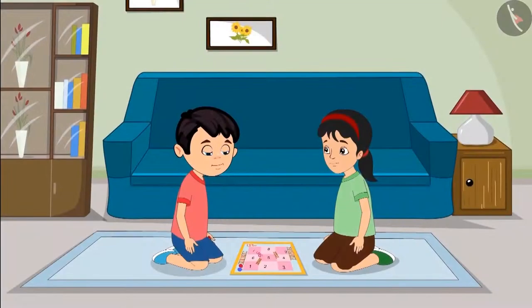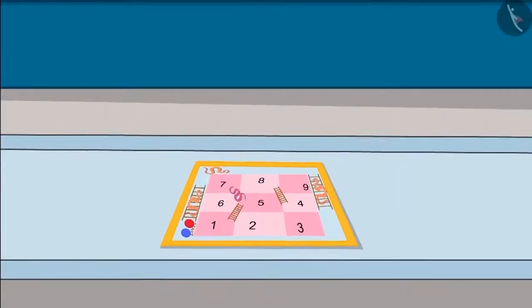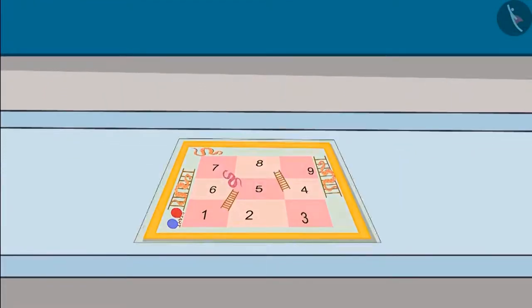Pinky and Chotu are playing the small snakes and ladder game because it has numbers only from 1 to 9. In this, two dice are thrown in turns and by adding numbers of both dice, one has to move the piece to the correct number. The one who reaches at 9 first wins the game. Let us see how Chotu and Pinky are enjoying this game.